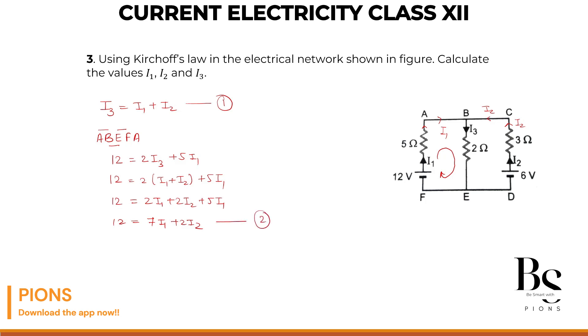Let's see equation 3 by considering the loop D, C, B, E, D. In this loop, our battery voltage is 6V.